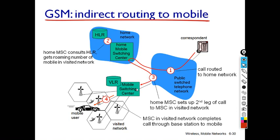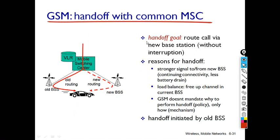In the foreign network, another MSC takes care of the call, cross-verifies the information with the VLR, and routes the call to the particular BTS and then to the mobile user. This is how indirect routing in the mobile GSM network works.